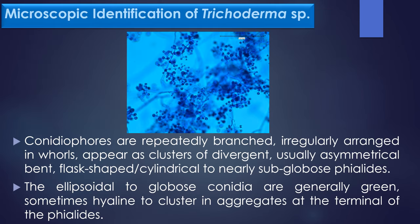Microscopic identification of Trichoderma species: This image shows the Lactophenol cotton-blue staining (LPCB staining) of Trichoderma species. Under Lactophenol cotton-blue staining, conidiophores are repeatedly branched, irregularly arranged in whorls, appearing as clusters of divergent, usually asymmetrical bent, flask-shaped or cylindrical to nearly subglobose phialides. The ellipsoidal to globose conidia are generally green, sometimes clumped in aggregates at the terminal of the phialides.